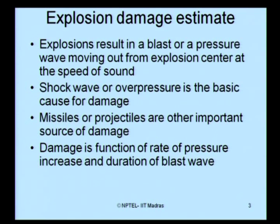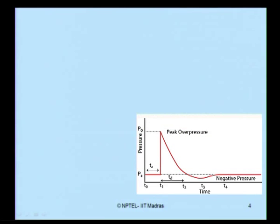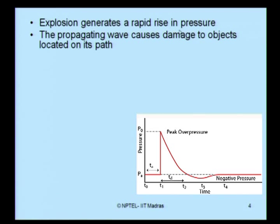Blast damage is estimated based on the peak side-on overpressure. To estimate explosion damage, one should understand the rate of pressure increase and the duration of the blast wave. Looking at a pressure-versus-time figure, the explosion generates a rapid rise in pressure. Before the pressure overshoots to its peak value, there is always a time delay called arrival time. Once the pressure reaches its peak value, P-naught or peak overpressure, practically within no instant of time, the pressure rises from atmospheric to the overpressure.